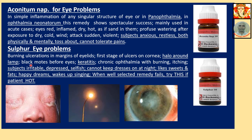Sulphur for eye problems: burning ulceration in margins of the eyelids, first stage of ulcer of cornea, halo around eye, black mobs before eyes, keratitis — inflammation of the cornea — chronic ophthalmia with burning and itching. Subject is irritable, depressed, selfish, cannot keep clothes on at night, likes sweets and pets, has happy dreams, wakes up singing. When a well-selected remedy fails, try Sulphur if the patient is hot, or Psorinum if the patient is chilly.